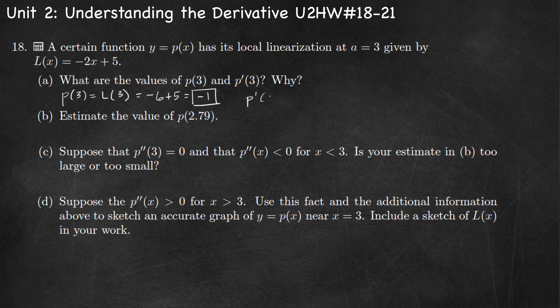Now p prime of 3 is going to equal L prime of 3. The slope of the curve equals the slope of the tangent line at the point of tangency. Since L of x is linear, we can read the slope directly from the equation — the slope is negative 2. So p prime of 3 equals negative 2.